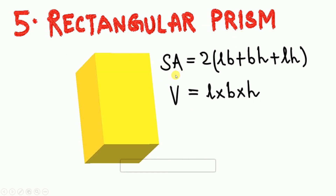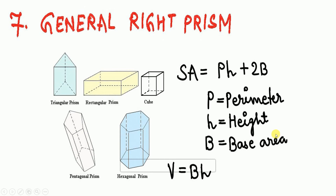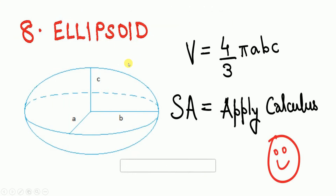For the rectangular prism (cuboid): surface area = 2(lb + bh + lh) and volume = l × b × h. For the cube: surface area = 6a² and volume = a³, where a is the side length. For a general right prism: surface area = ph + 2B, where p is the perimeter of the base, h is the height, and B is the base area. Volume = B × h.